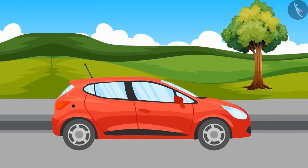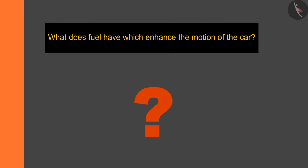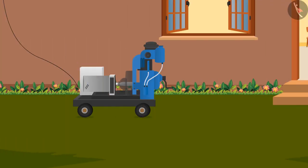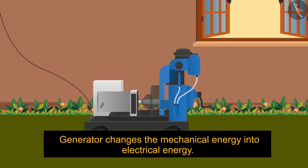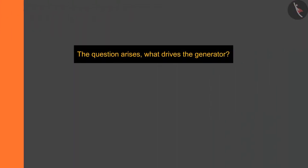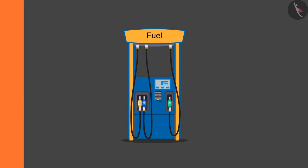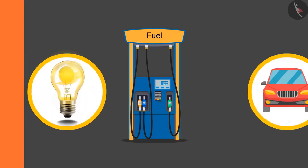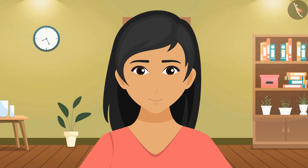As the fuel in the tank gets over, the moving car on the road stops. As soon as the fuel is refilled, it starts moving again. What does fuel have which enhances the motion of the car? As we have seen in our previous videos, an electric generator changes mechanical energy into electrical energy. What drives the generator? There is something in the fuel which enhances the motion of the shaft and the car. Actually, fuel has some form of energy stored in itself which transfers to the engine of the car and generator — it's all about energy.